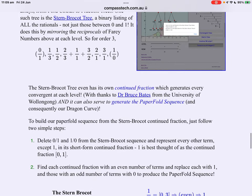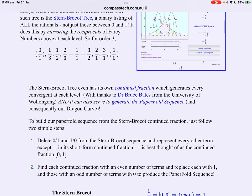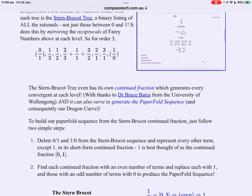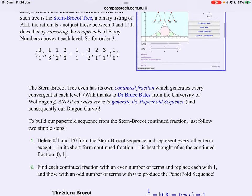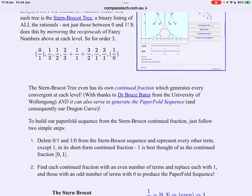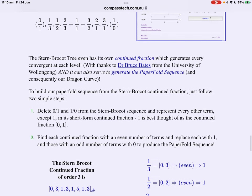Again lots to explore there. Stern-Brocot tree even has its own continued fraction. It actually generates every convergent at every level and this was discovered or developed if you like by Dr. Bruce Bates from the University of Wollongong. What's interesting here is it can also serve to generate the paper fold sequence and hence our dragon curve.